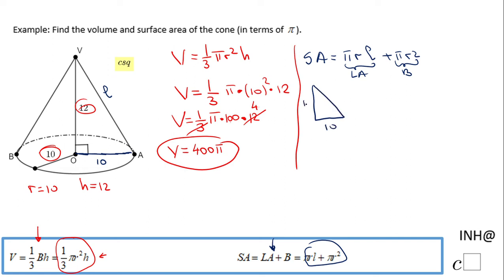10, 12, and this is the slant height which I'm going to call x. I'm going to use a squared plus b squared equals c squared. So I'm going to have 10 squared plus 12 squared equals x squared.